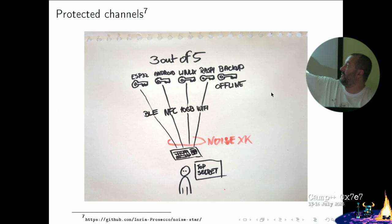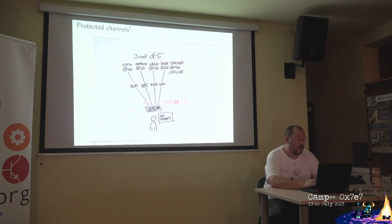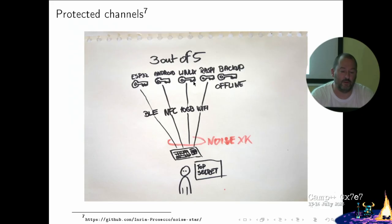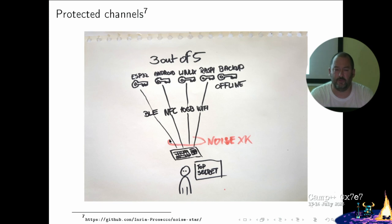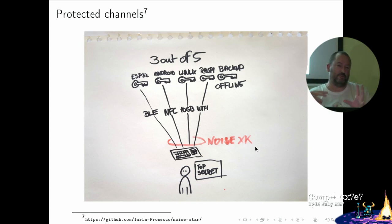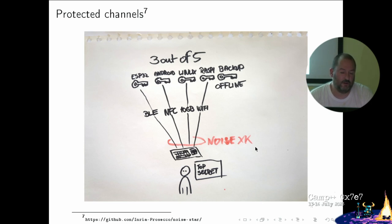You still need protected channels. The client is in a star topology and you don't want it to learn anything from communications between shareholders. For that I use the Noise protocol — also used in WireGuard — with the XK pattern. This is very modern, simple, and efficient. You don't need TLS for this. The choice is Noise XK: K means the server key is known, and the client key while not fixed is known.